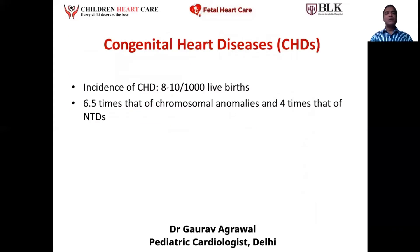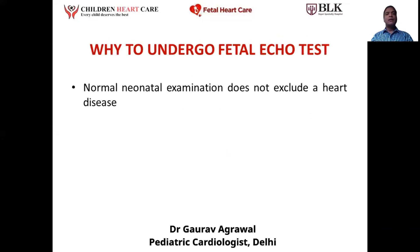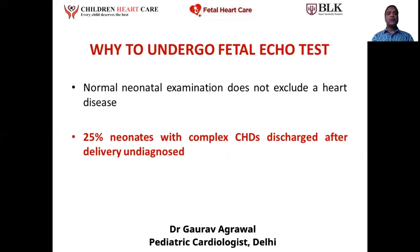Birth heart defects in children are known as congenital heart diseases, and the incidence of these heart defects is 8 to 10 per 1000 live births. Out of 1000 live births, 8 to 10 are having some form of heart disease. 30% of neonatal deaths occur due to congenital heart diseases and 10% of infant mortality occurs due to congenital heart disease. Normal neonatal examination at birth doesn't exclude a heart disease, and 25% of neonates with complex heart disease are discharged after delivery undiagnosed.